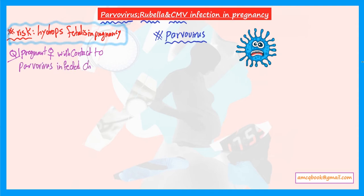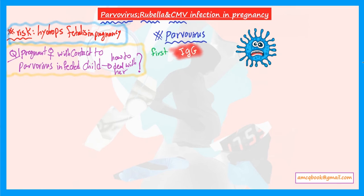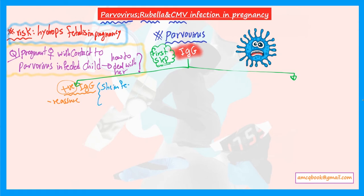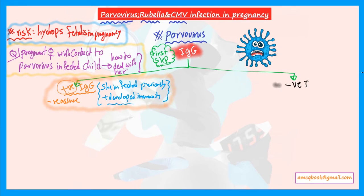This is the algorithm. First step: start by checking IgG. IgG appears in chronic infection, so if IgG is positive, that means the woman was previously infected and has developed immunity — just reassure and follow up, no danger. But if IgG is negative, that means she was not previously infected. The next step is to check IgM, which appears in acute infection.